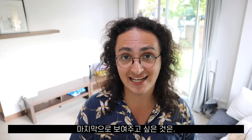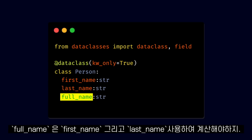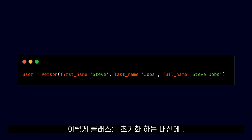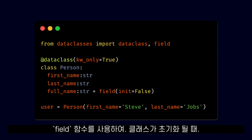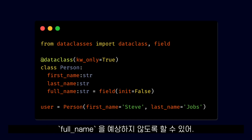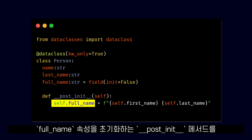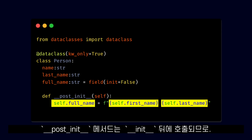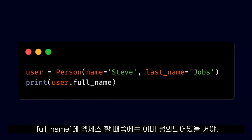The last thing I want to show you about data classes is the __post_init__ special method. Sometimes you have a class that has a property that is calculated based on another property — like full_name, which should be calculated using first name and last name. What we can do is tell Python to not expect full_name when the class is being initialized, by using the field function with the init parameter set to false. Then we define a __post_init__ special method in our class to initialize the full_name property using first name and last name. The __post_init__ method will be called after __init__, so you can be sure that by the time you access full_name, it will already have been defined.